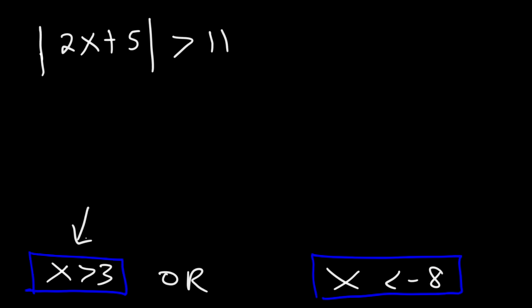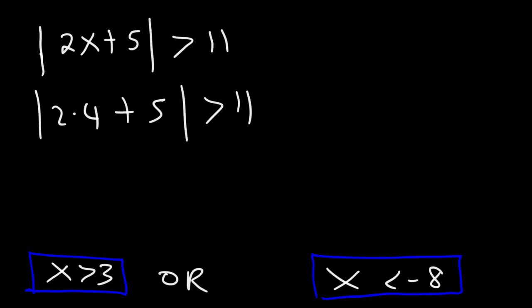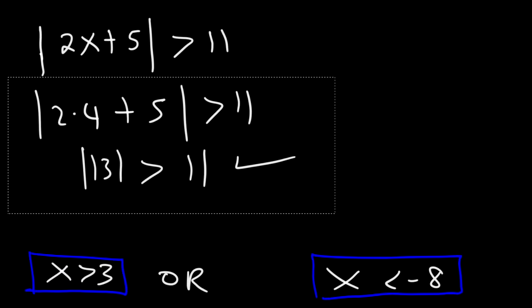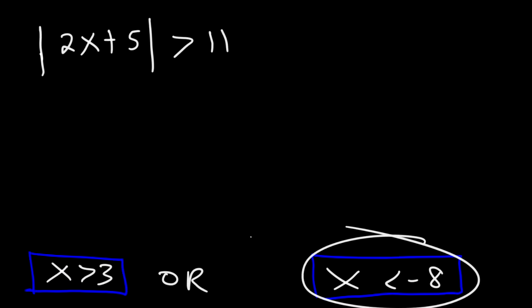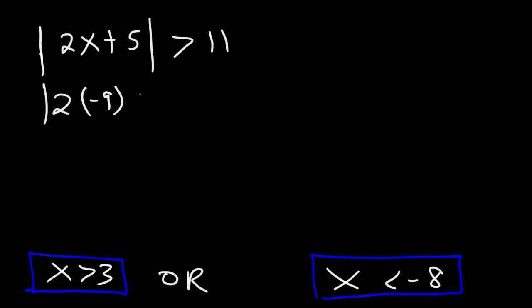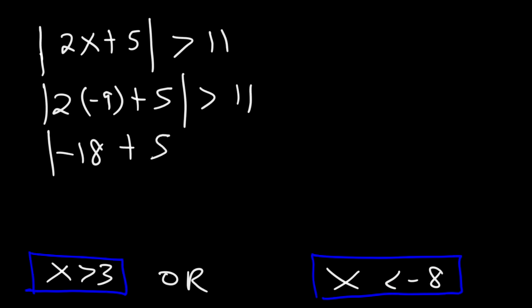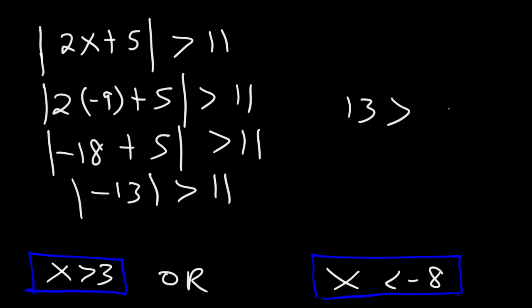You can check your answers. If we pick a number greater than 3, let's plug in 4. This would be 2 times 4 plus 5. 2 times 4 is 8, and 8 plus 5 is 13. The absolute value of 13 is 13, and 13 is indeed greater than 11 — that works. Now if we plug in a number less than negative 8, like negative 9: 2 times negative 9 is negative 18, and negative 18 plus 5 is negative 13. The absolute value of negative 13 is positive 13, which is greater than 11 — so that is a true statement.